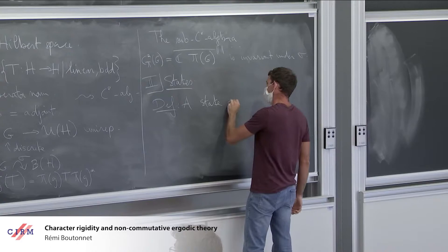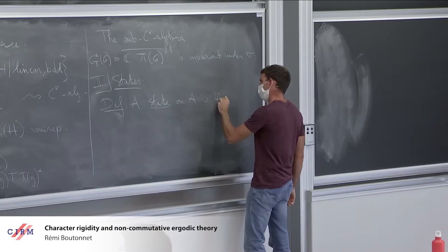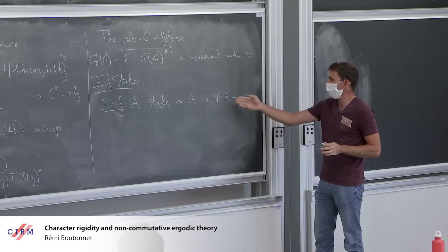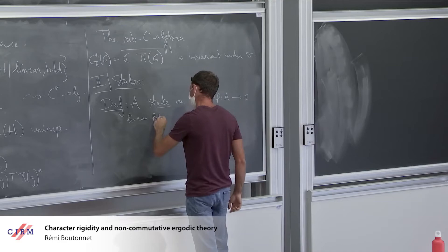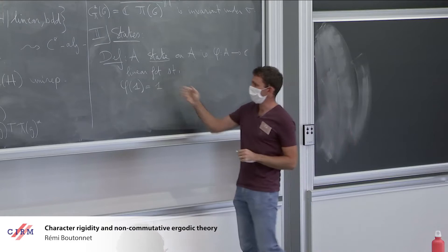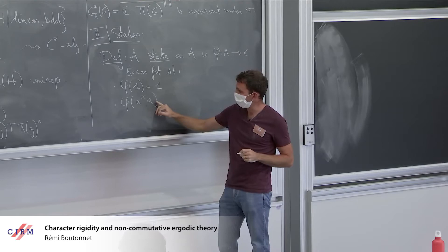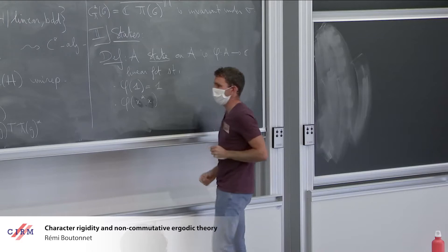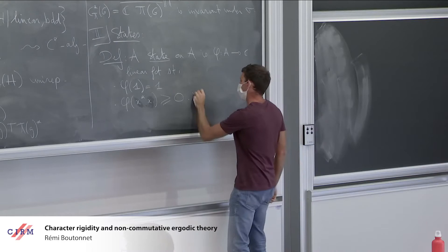A state is a linear functional — not necessarily a homomorphism. There is a normalization: I assume that the unit is taken to the complex number one. And I require it to be positive: if I plug in a positive element X in A — meaning something that can be written as X*X — I get a positive answer. That's really a state.